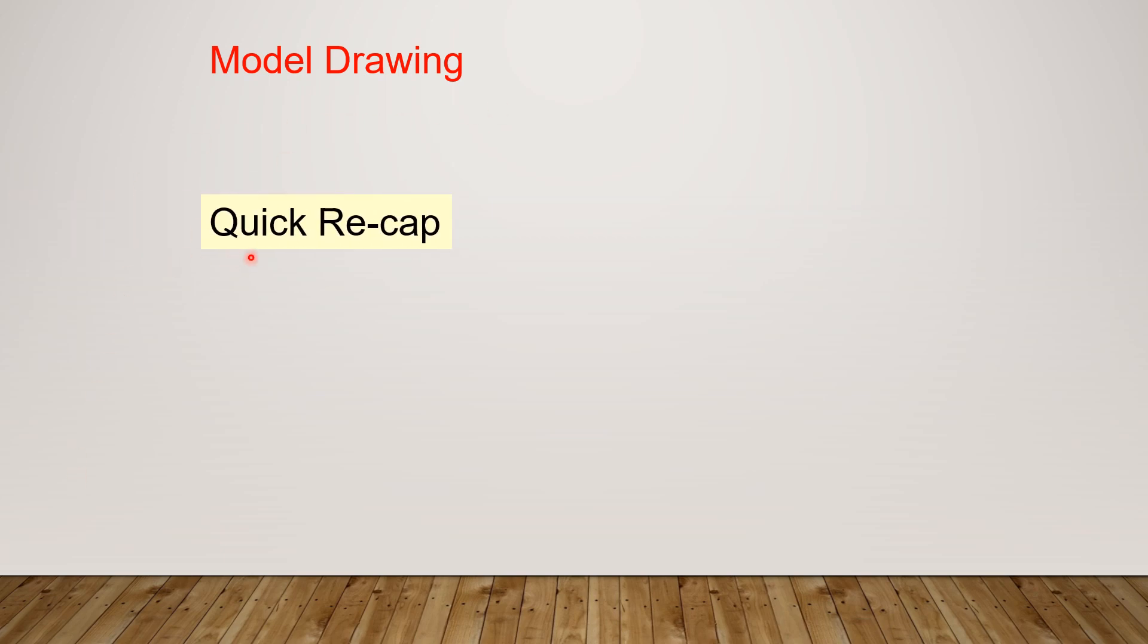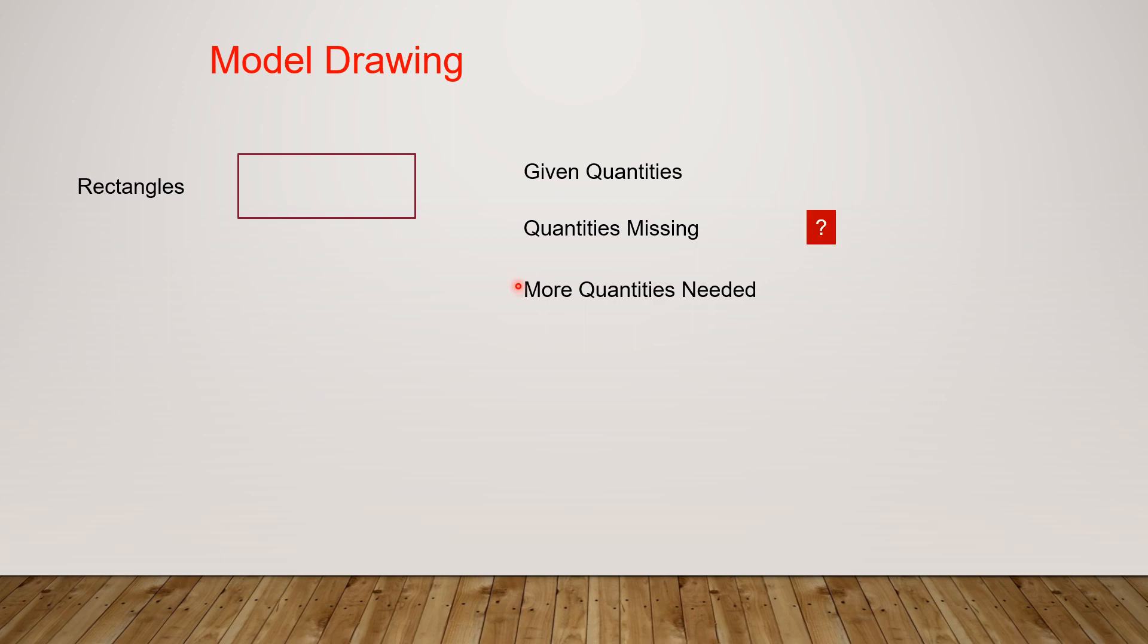Let's take a quick recap first. We use rectangles to show the main idea. These can represent the given quantities, the quantities missing, and the more quantities needed. We represent the quantities missing with a question mark. These can be used for addition, subtraction, multiplication, and even division.